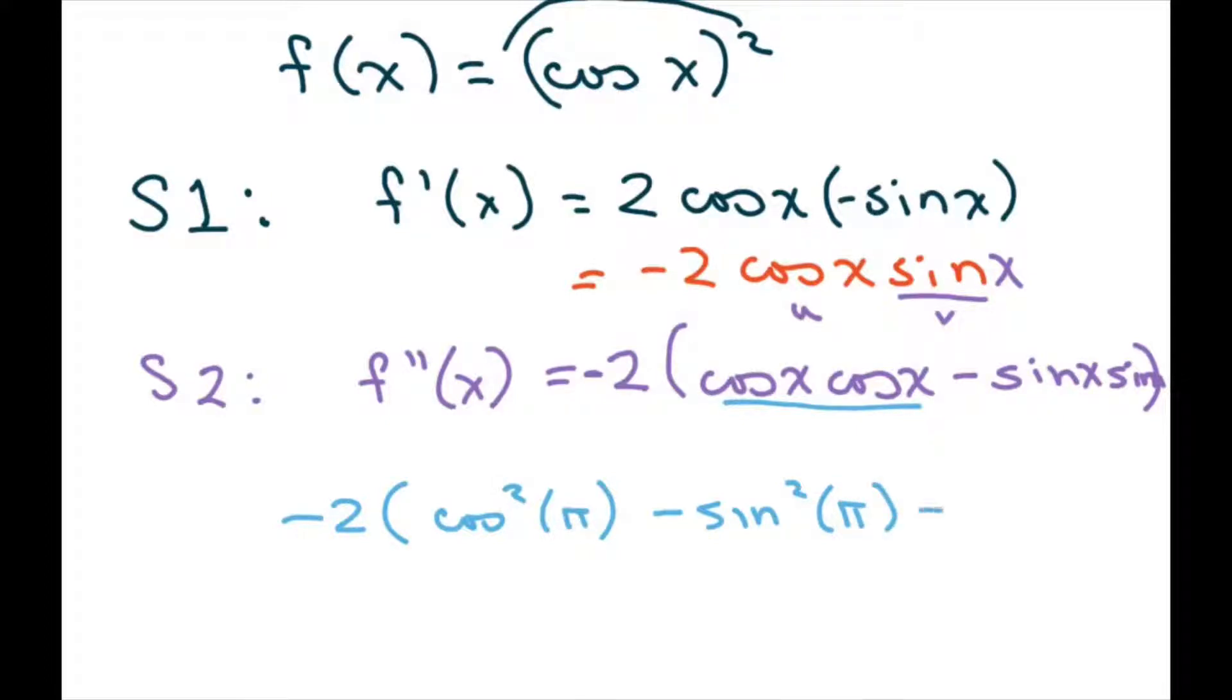So basically, cosine of π is just negative 1, but when you square it, you get 1. Cosine of π is negative 1, and negative 1 squared is just 1. And then sine of π is 0, you square 0, you still get 0.